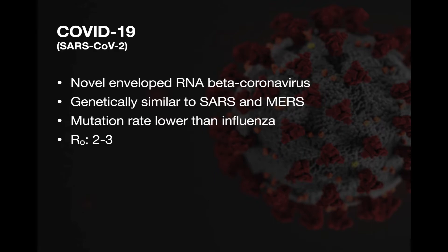The coronavirus itself is a novel virus. It's part of the coronavirus family, but it is a new strain we've identified. It's an enveloped, non-segmented, positive-sense RNA beta coronavirus. It shares similar homology to the SARS virus and the MERS virus from a couple decades ago, and is about 80% genetically similar to SARS. The virus capsule itself is about 120 nanometers in diameter, which becomes important as we think through infectivity and the ultrasound findings of this virus. The mutation rate at this point seems to be somewhat lower than influenza.